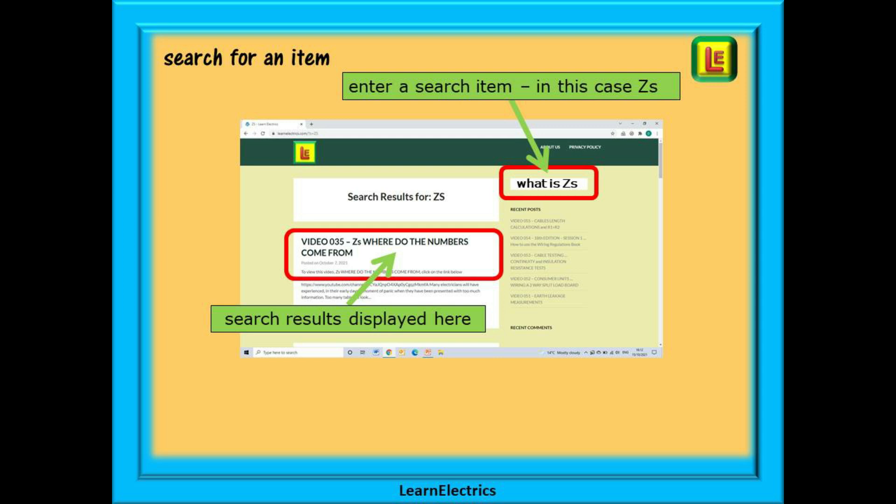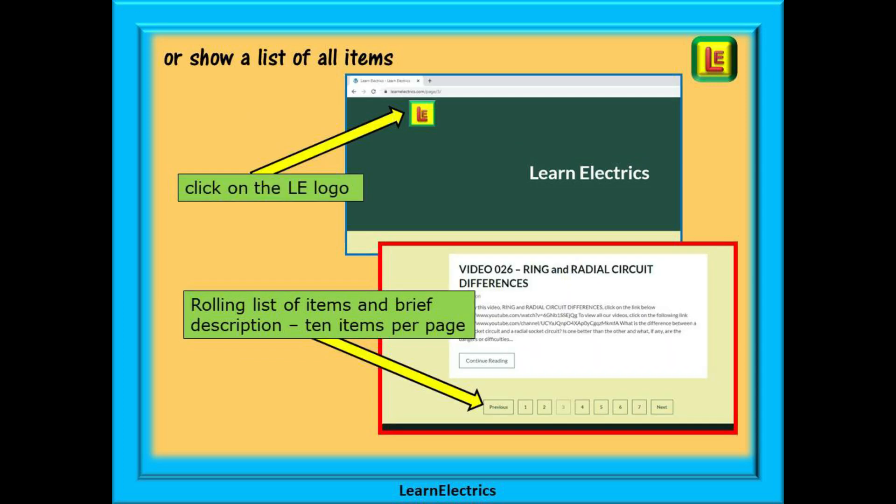They will be shown with a short description, and each video listed will have a link shown that will take you directly to that exact YouTube video. Or you can browse through a list of all the available items and videos. To do this, click on the LE logo on the top left of the home page, and all our items and videos will be shown. There will be 10 items shown on each page, and at the bottom of each page is a page selector. Page 2, page 3, 4, and so on, that will bring up the next 10 items or videos in the list.